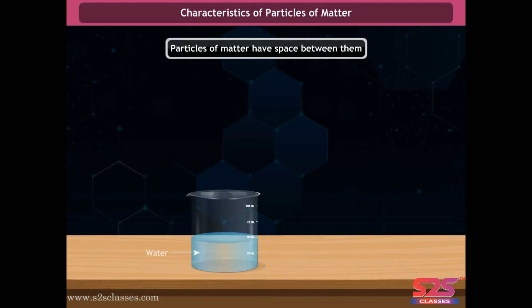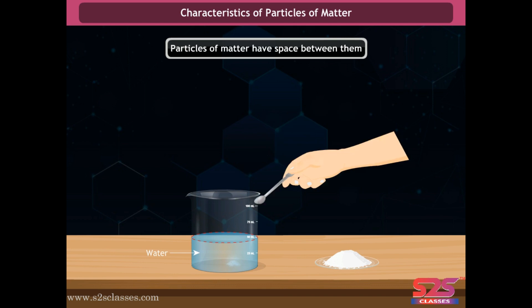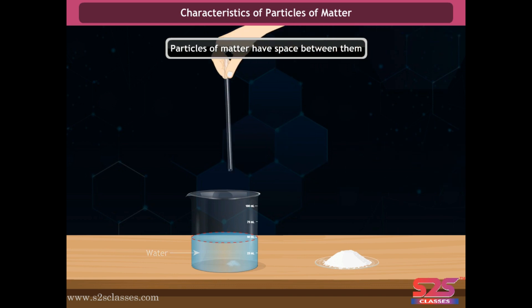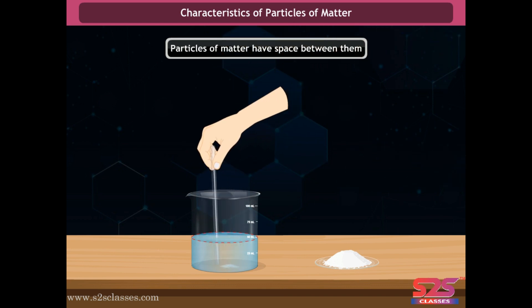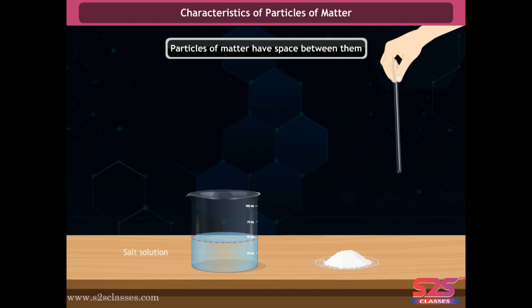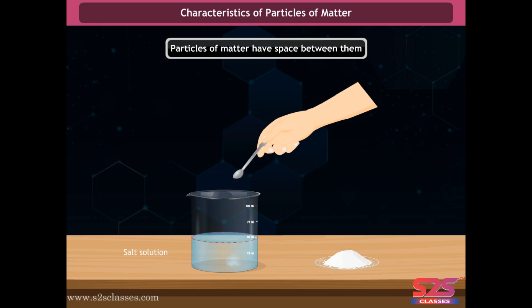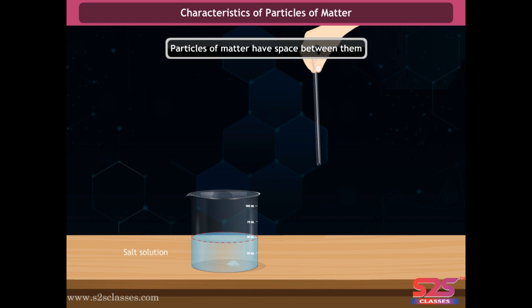Characteristics of particles of matter: take 50 milliliters of water in a beaker and mark the level of water. Now add some salt to the beaker and stir it well with a glass rod. Observe the level of water, then add some more salt and repeat the procedure.